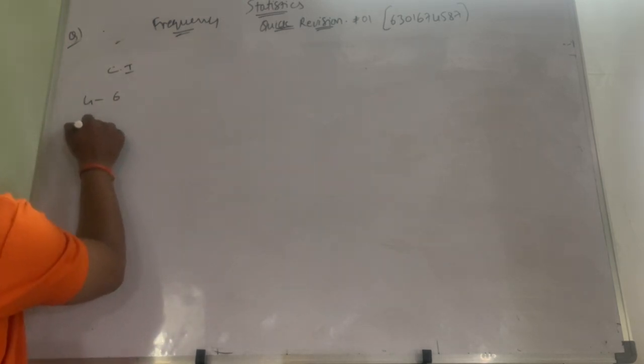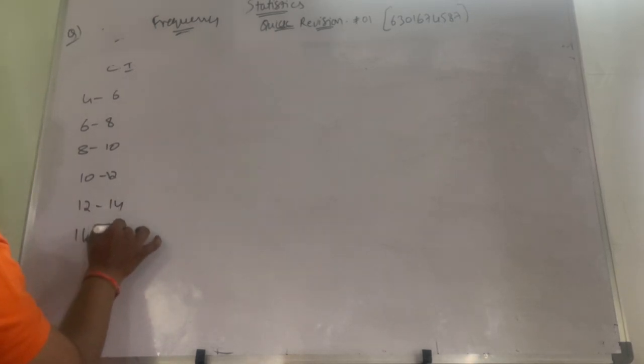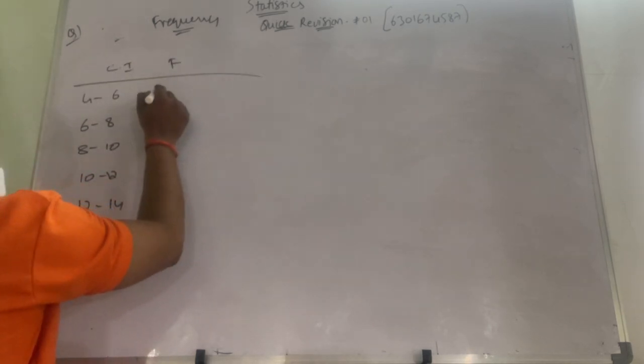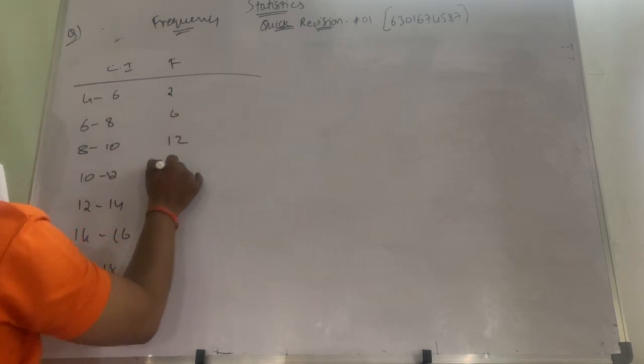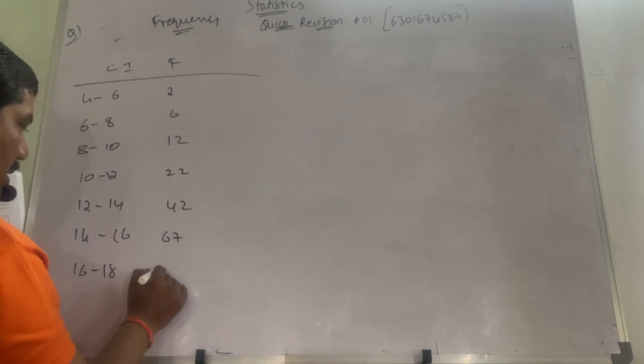Same question again I am repeating, actually this is the twisting question. So I am writing directly class interval this time: 6 to 8, 8 to 10, 10 to 12, 12 to 14, 14 to 16, 16 to 18 was given. Frequency was 2, 6, 12, 22, 42, 67, 76.